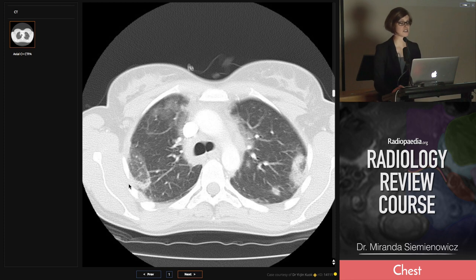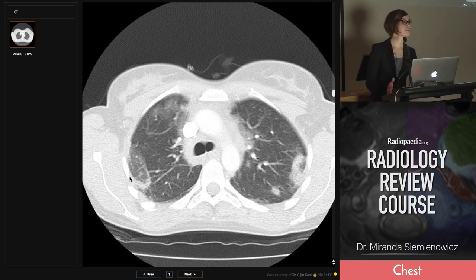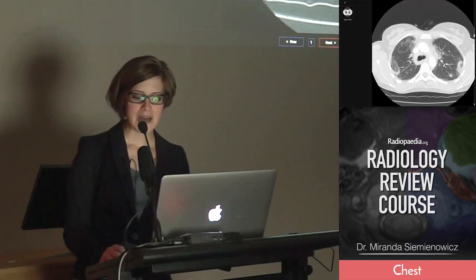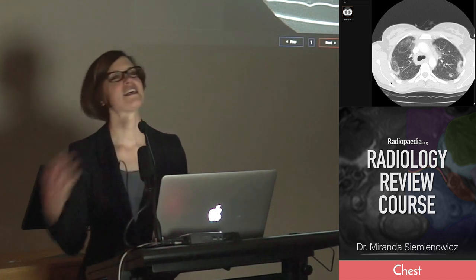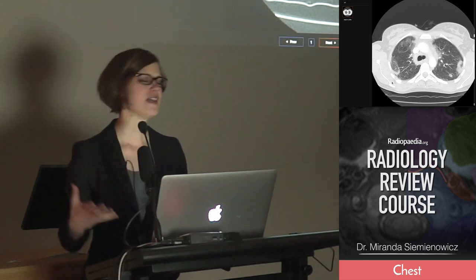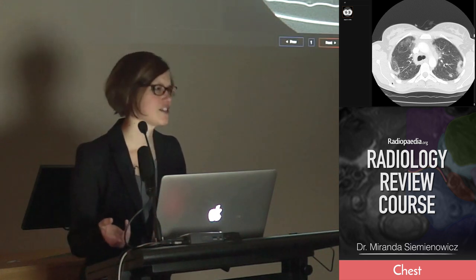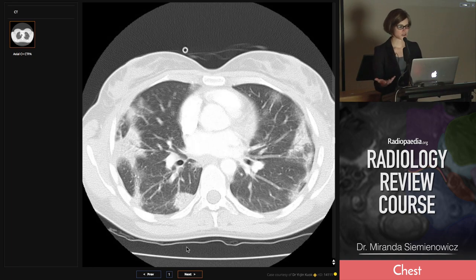It's a bit ground glass in the middle, with consolidation around the outside - you want to call it the atoll sign, and then you say organising pneumonia. And that's good, because that's what it is. But the atoll sign is not at all specific for organising pneumonia - it's the classical description, but it occurs in plenty of things, including pulmonary infections. The point is that you've seen these migratory opacities, non-responsive to antibiotics - it's organising pneumonia.